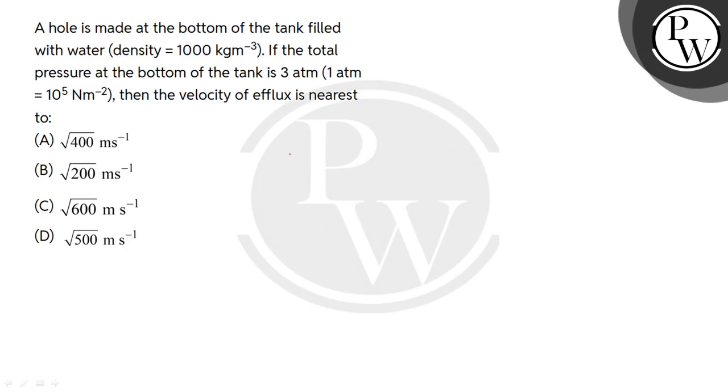Hello, let's read the question. A hole is made at the bottom of the tank filled with water, density equals to 1000 kg per meter cube. The total pressure at the bottom of the tank is 3 atm. 1 atm equals to 10⁵ N per meter square. Then the velocity of the efflux is nearest to?